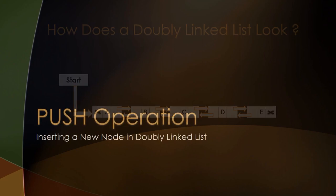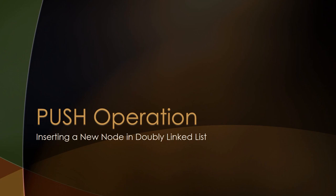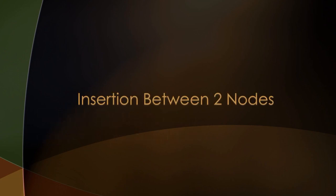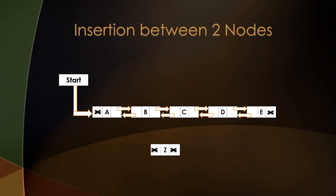Now let's begin with the basic operations on a doubly linked list. First we'll begin with what is known as a push operation, or inserting a new node. We'll start by inserting a node between two nodes in an already existing linked list. The linked list contains five nodes already present, namely node A, B, C, D, and E. The new node Z will be inserted between nodes B and C.